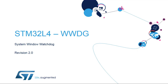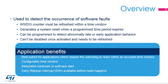Welcome to this presentation of the STM32 System Window Watchdog. It will cover the main features of this peripheral used to detect software faults. The Window Watchdog is used to detect the occurrence of software faults. It has a programmable free-running down counter that must be refreshed within a window period that guarantees proper software execution. If a problem occurs and the program time period expires, the Window Watchdog generates a system reset.